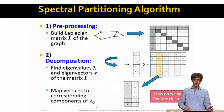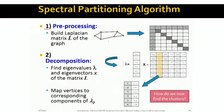Let me now give you an example. In the preprocessing step, I take our graph G and compute the Laplacian matrix L. In the second step, we do the eigenvalue decomposition, where we take L and find a set of eigenvalues and eigenvectors. We take the second smallest eigenvalue and the corresponding eigenvector. Here are all the nodes, one to six, and these are the corresponding entries of the eigenvector.